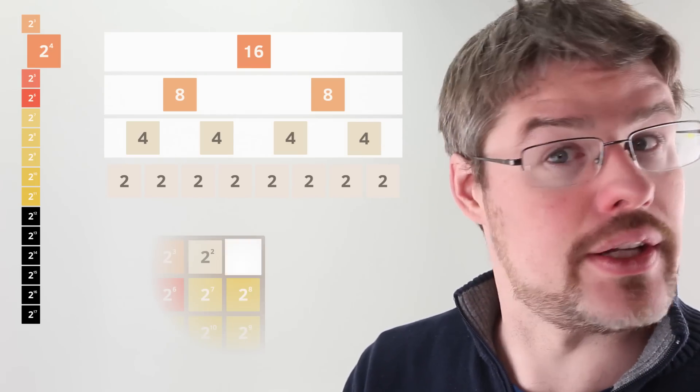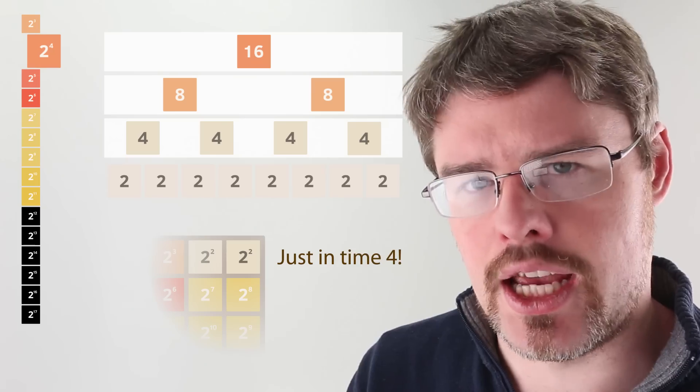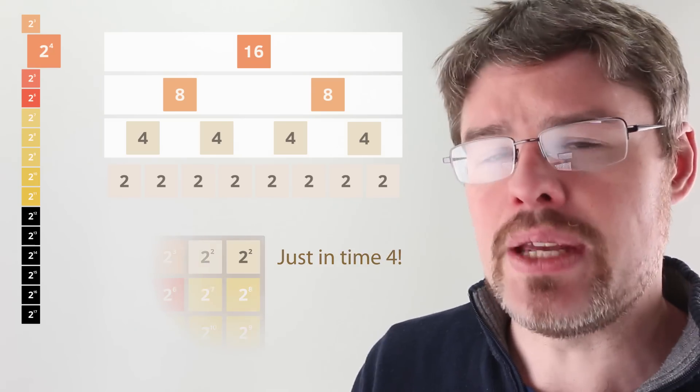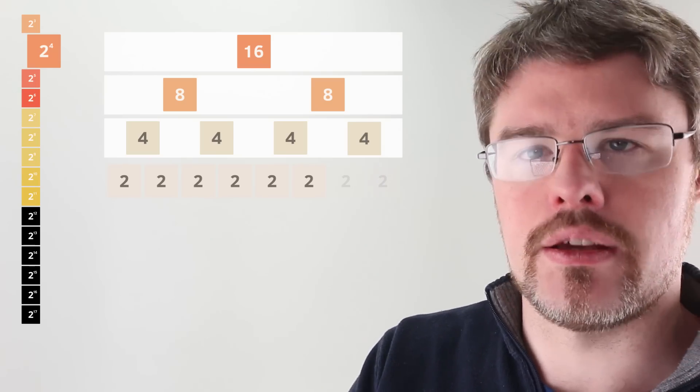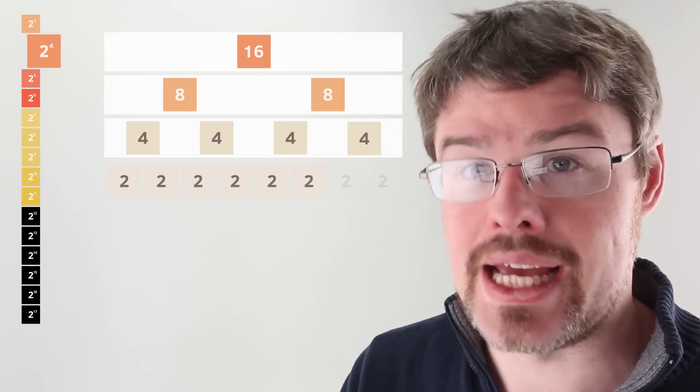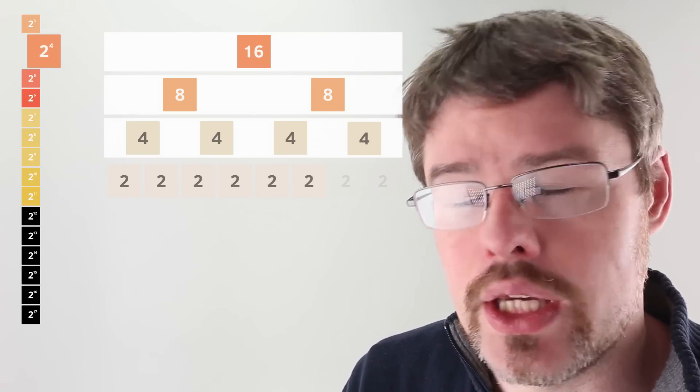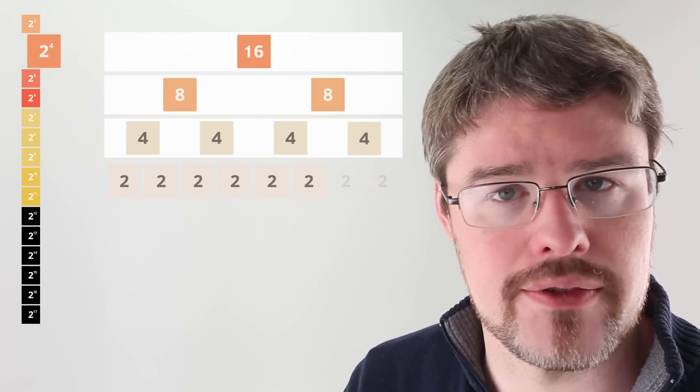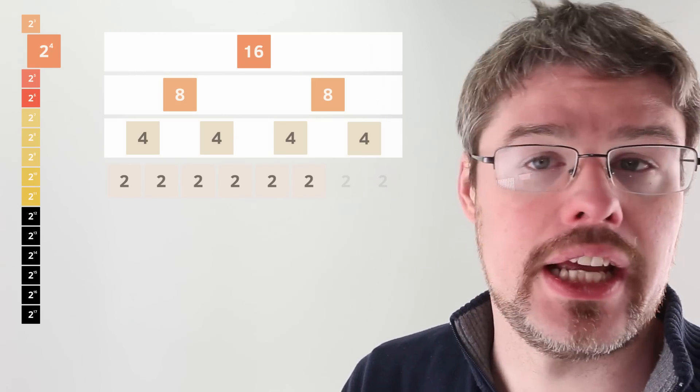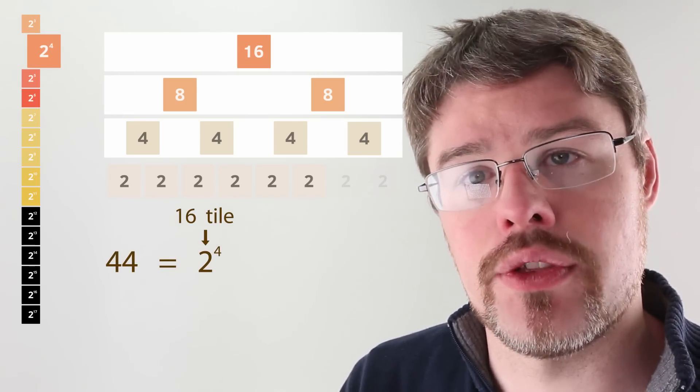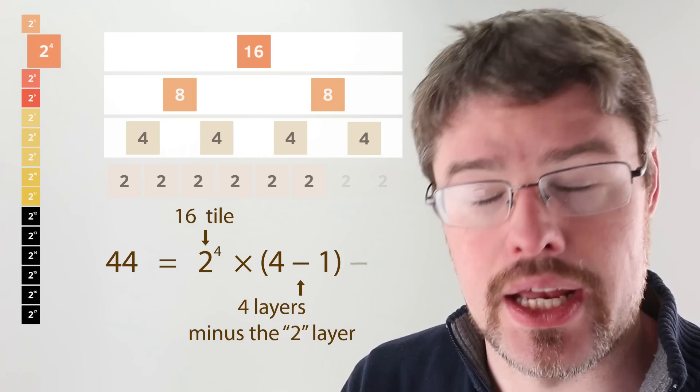Do you remember earlier how we had a 4 appear instead of a 2 just in time to make that snake collapse? That means we didn't get any points for that 4, which means that we've overestimated the amount that this 16 tile is worth by exactly 4 points. Now, we could try to come up with some complicated expression for this, or we could just subtract off 4 points. So, here's the actual value of that tile. It's 44, because that's 2 to the 4th times 4 minus 1, minus 4.